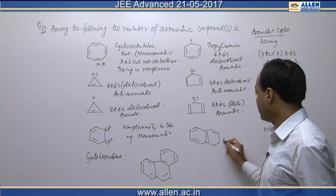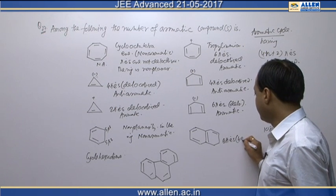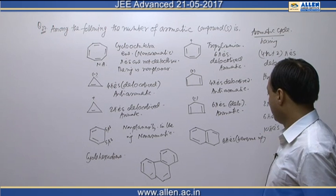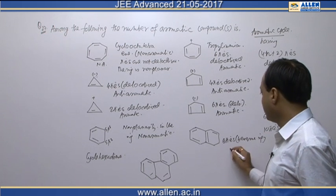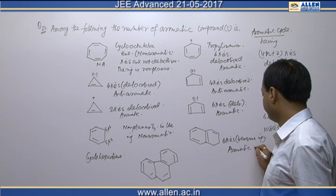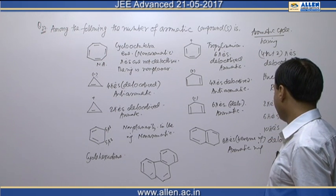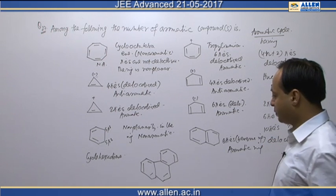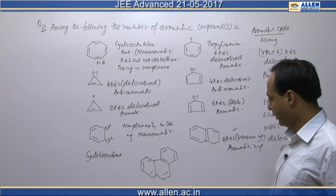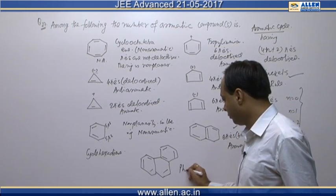This compound also has 6 pi electrons because of the benzene ring, and according to Hückel's rule it is aromatic in nature. The benzene ring structure is present with 6 pi electrons delocalized, so it is an aromatic ring. This compound is called phenanthrene.